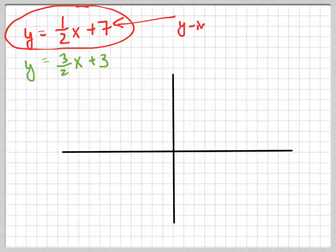That's your y-intercept. 7, 1, 2, 3, 4, 5, 6, 7, there it is right there. There's my y-intercept, and my slope is right here, rise over run. If I go up 1, I'd go over 2. So there's my next point. All you need is 2 points to graph a line.